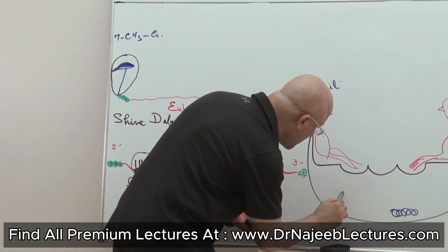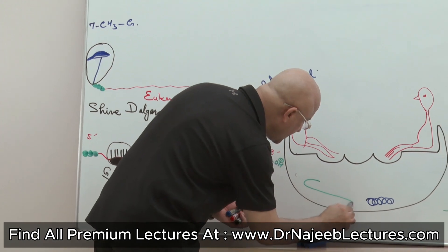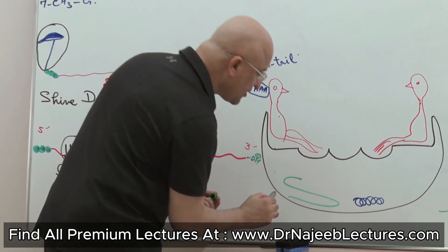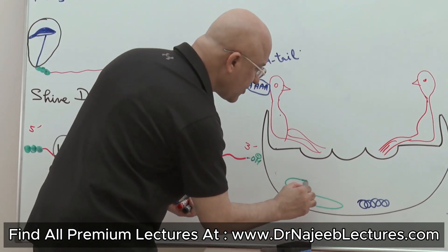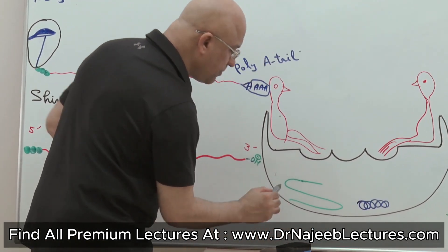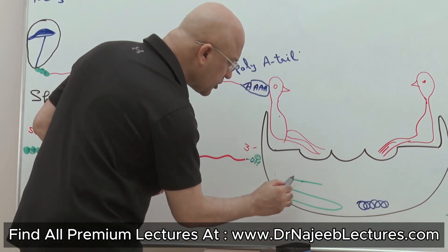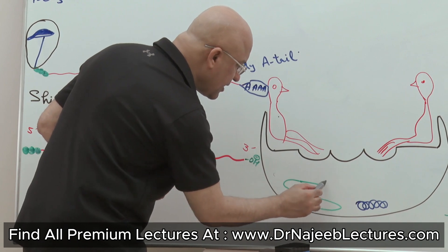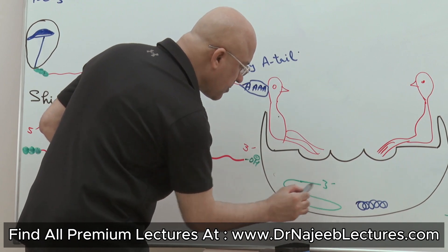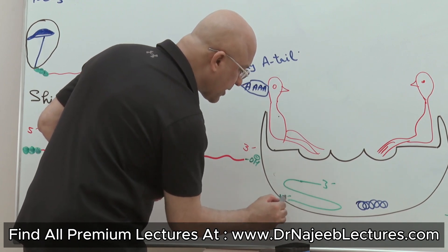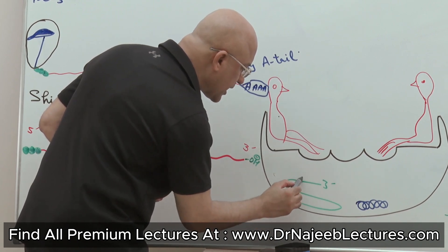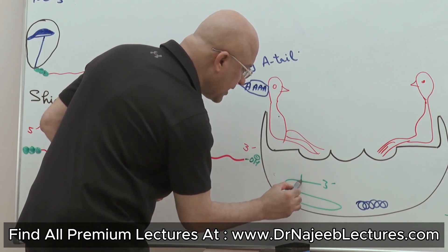This special point is the 16S ribosomal RNA. It has a 3' end and a 5' end — this is the 16S ribosomal RNA.